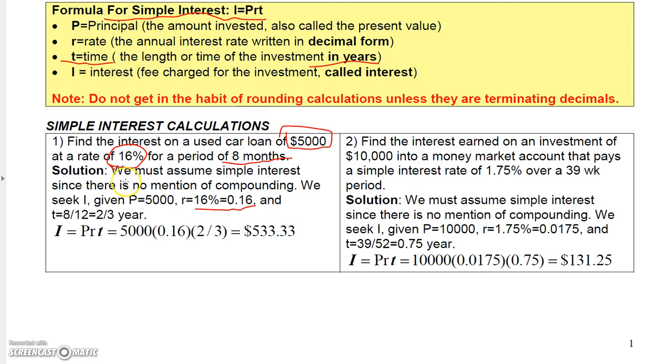So if it's eight months, we would convert eight months to years by just dividing it by 12. And you could reduce that to two thirds if you wanted to, you didn't have to, but if you wanted to, you could do that. And then so we put this information in the calculator. Here's your principal, here's your rate, here's your time, and then just punch a few buttons on your calculator. And you can see that the interest is $533.33.